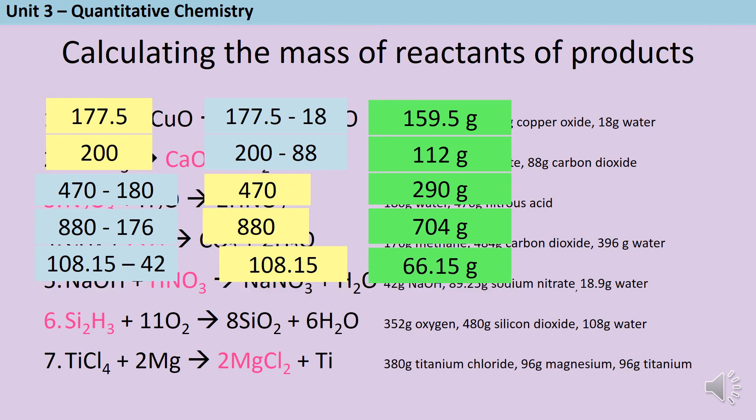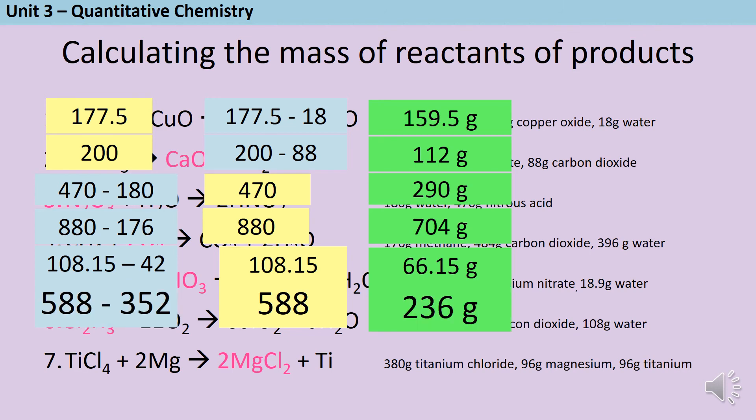The total on the right hand side for question six is 588 grams. And if we subtract from that the 352 grams of oxygen, we're left with 236 grams.